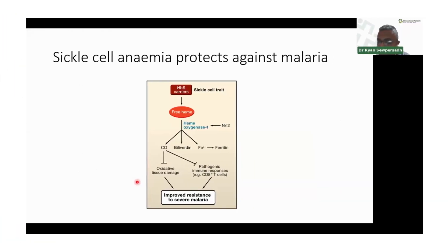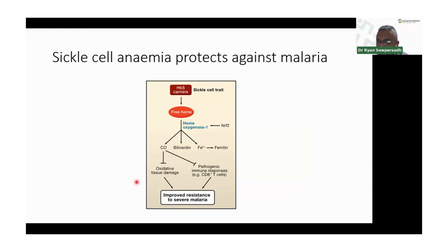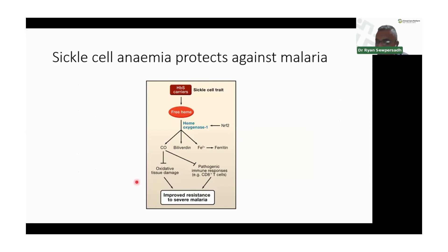Plasmodium vivax, which occurs in North Africa, uses a specific red cell surface receptor called the Duffy antigen. Some individuals, particularly those who have sickle cell anemia, lack this receptor, meaning that Plasmodium vivax cannot get into their cells.